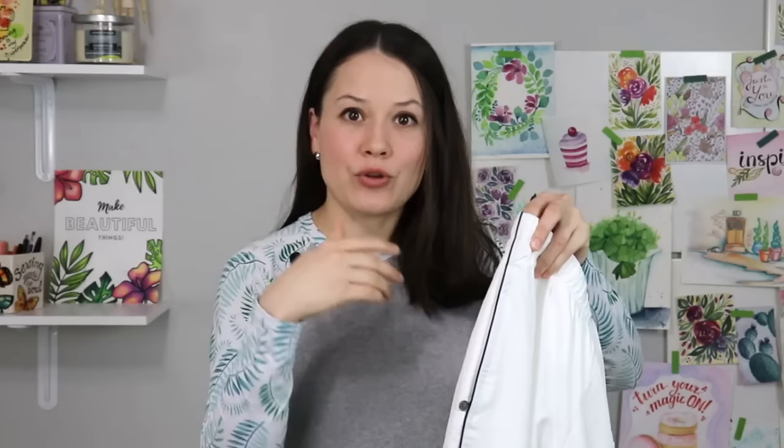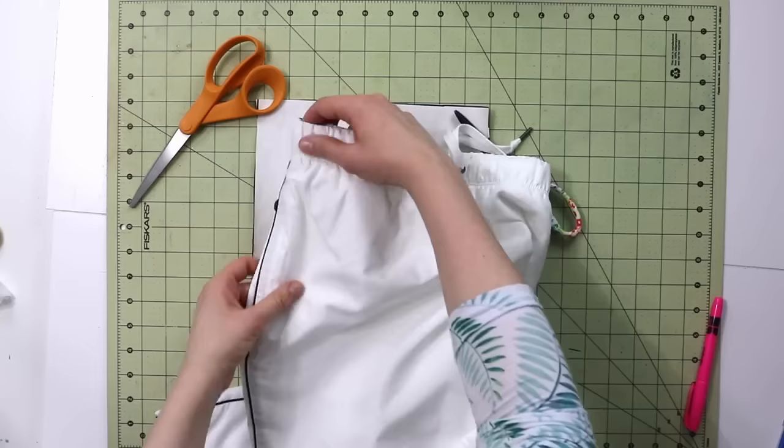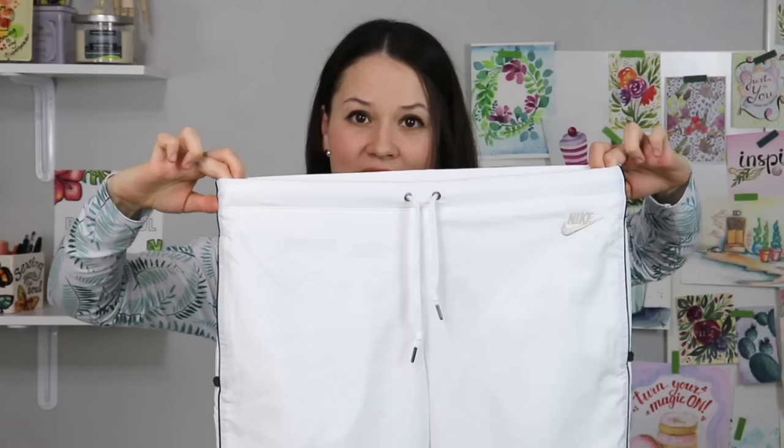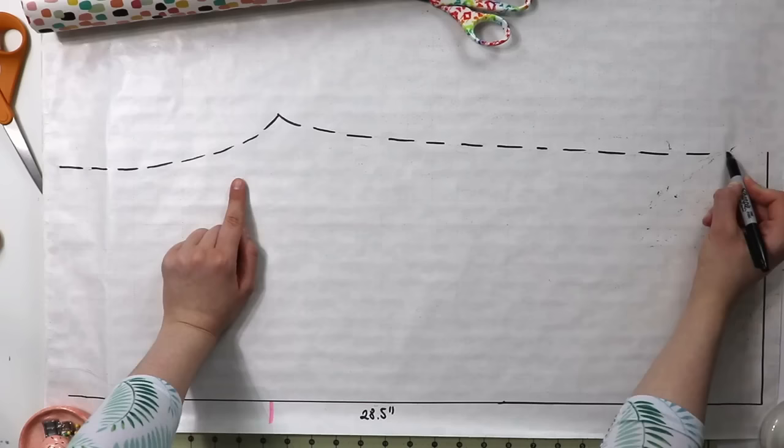The reason why I did not curve it in is because here I have an elasticated waistband and currently it's cinched in. But if you actually straighten it out you will see that the side seam is going to be straight from the top of baseline all the way to the bottom. So that's the reason I did not curve it in on a side seam.